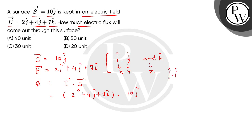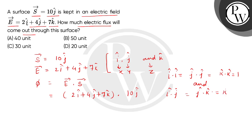The dot product properties are: i dot i equals j dot j equals k dot k equals 1. And the dot product of two mutually perpendicular unit vectors — i dot j equals j dot k equals k dot i — equals zero.